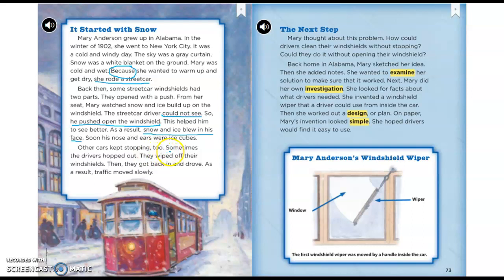Other cars kept stopping too. Sometimes the drivers hopped out, wiped off their windshields, then got back in and drove. As a result, traffic moved slowly. So why is traffic moving slowly? Because drivers had to stop, get out, and clean their windshields. We also have a key signal phrase here: 'as a result'—the cars stopped, and as a result, traffic was moving slowly.